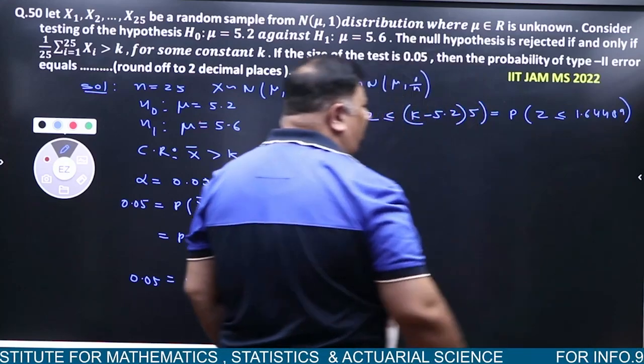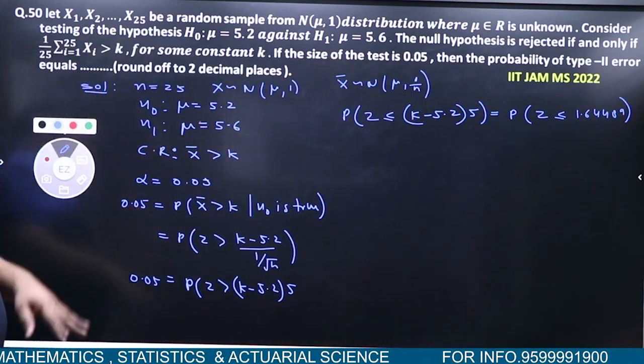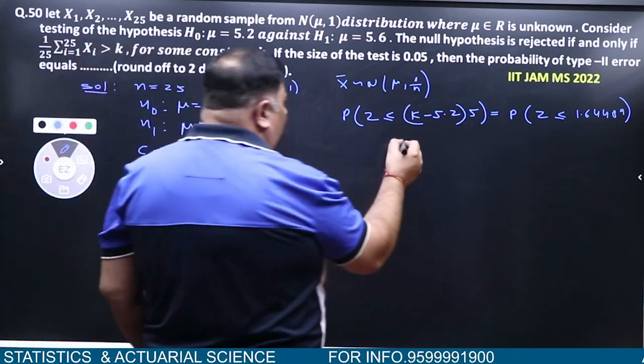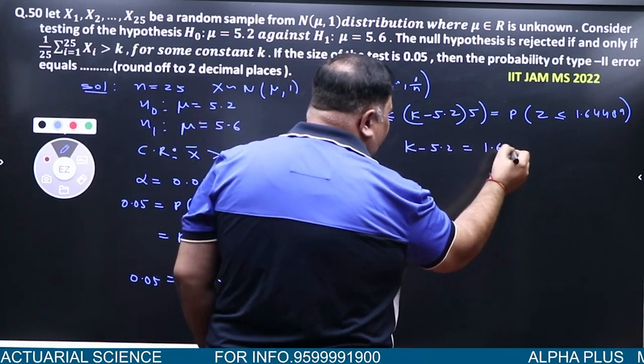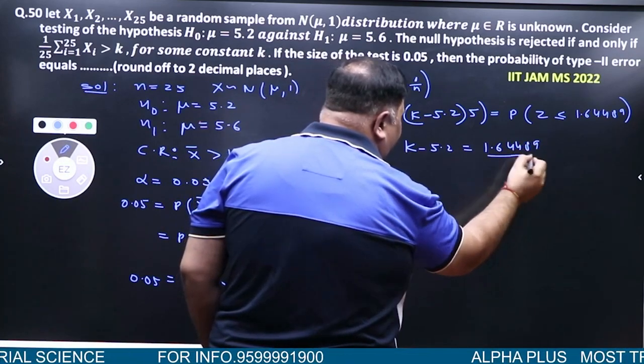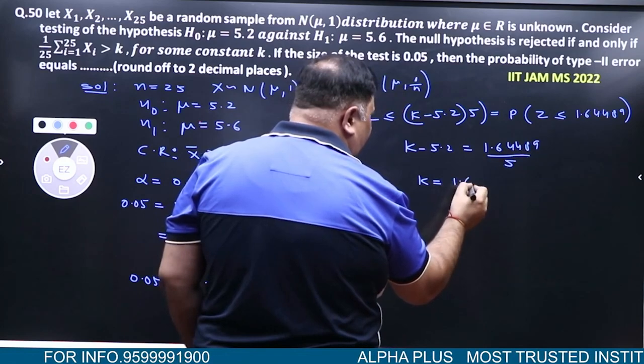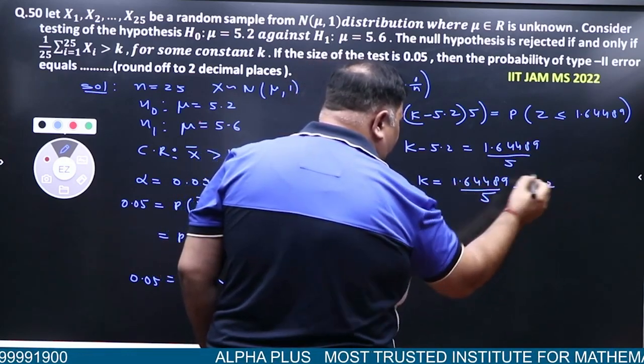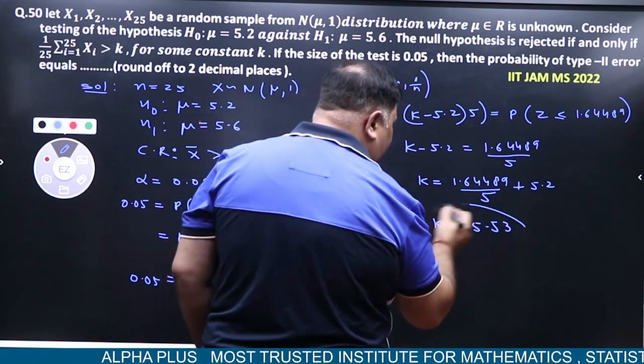The 0.95 percentile, 95 percentile. So equate: K minus 5.2 equals 1.6448 divided by 5, plus 5.2. 5.528 is the answer.